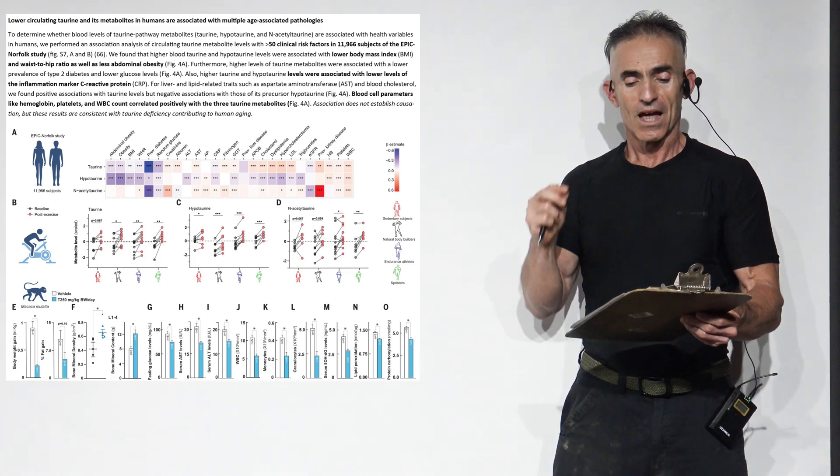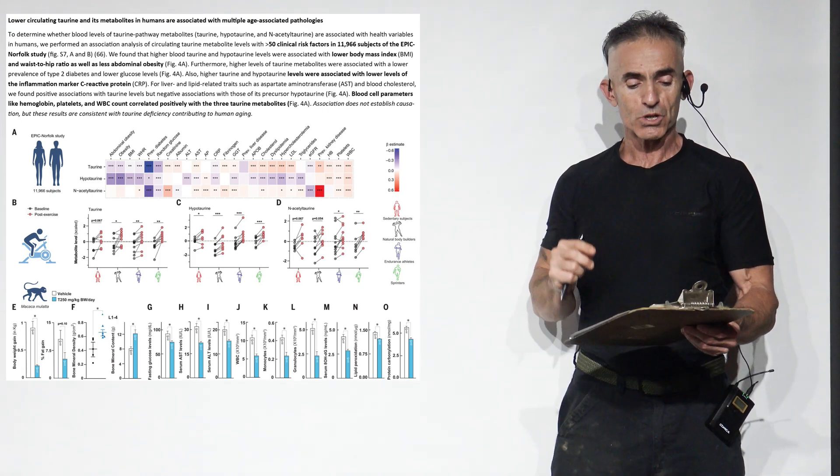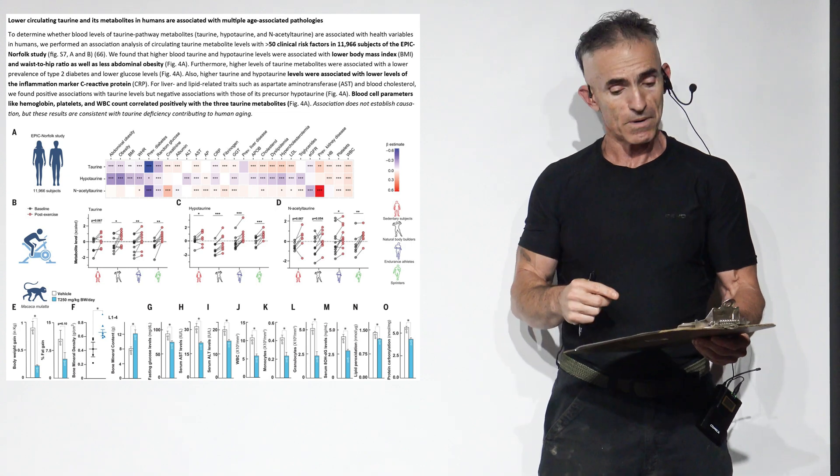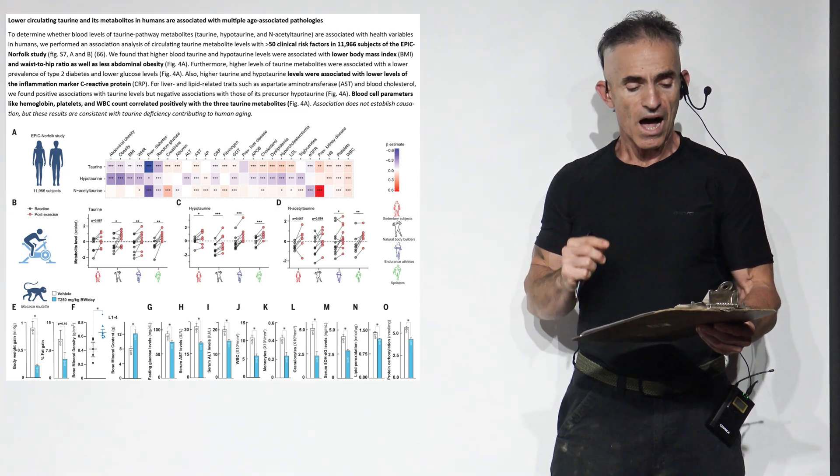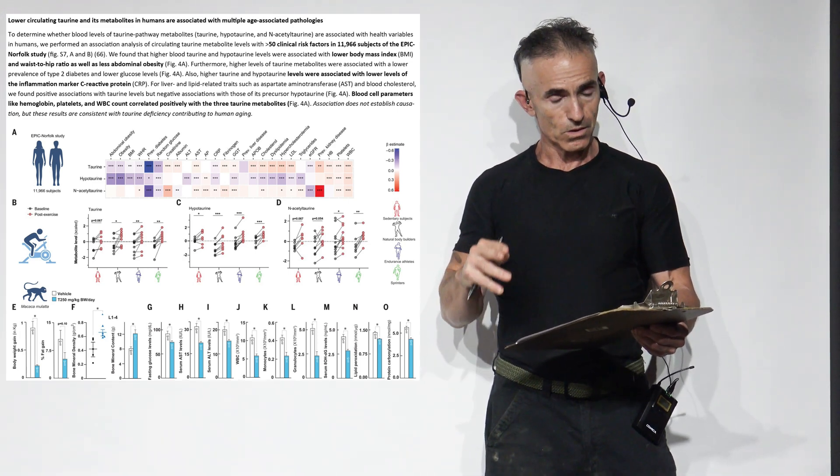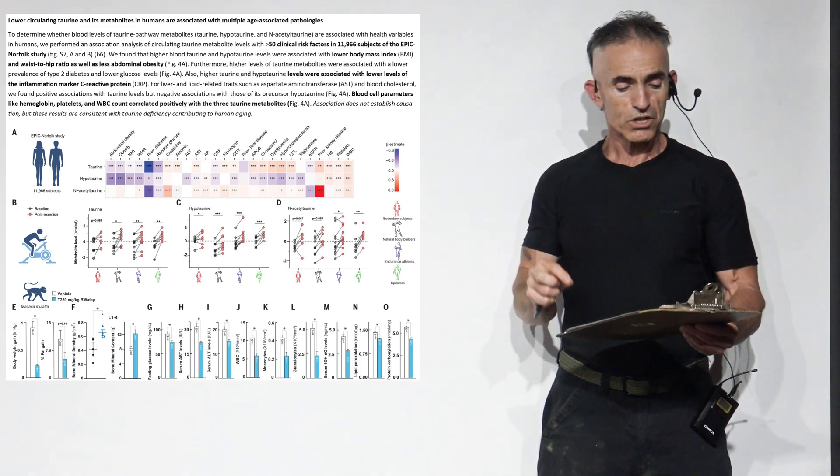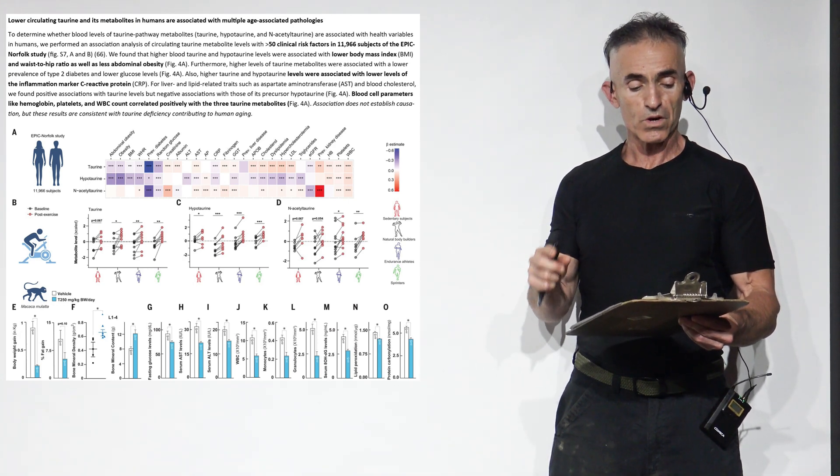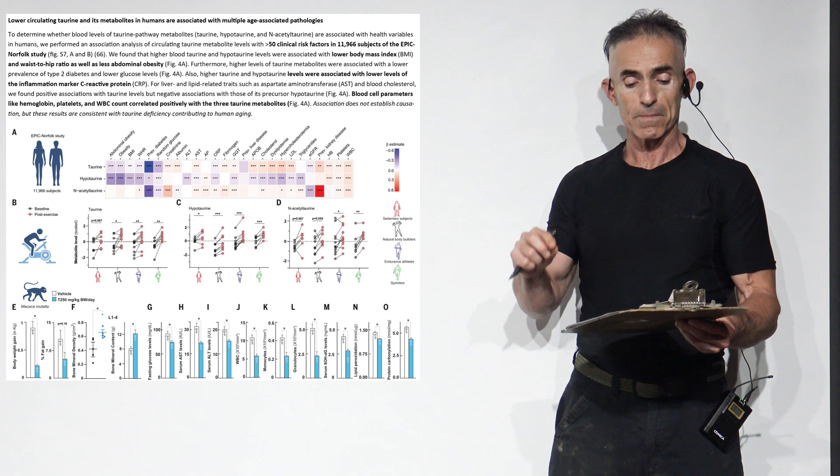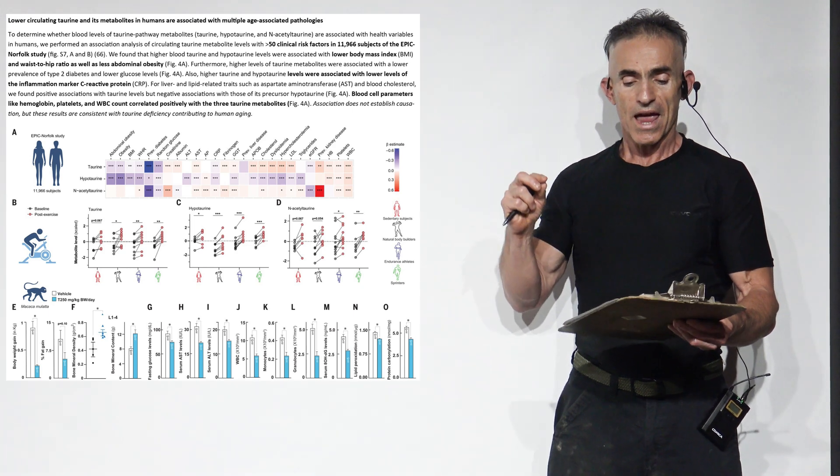As the figure, no pun intended. Higher levels of taurine metabolites were associated with lower prevalence of type 2 diabetes and lower glucose levels. Also, higher taurine and hypotaurine - again, not low, but it's a metabolite - were associated with lower levels of inflammation marker C-reactive protein.